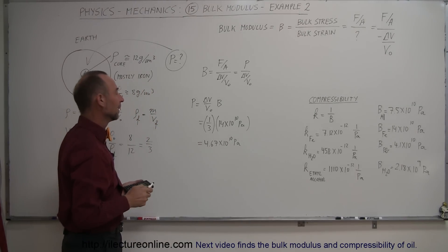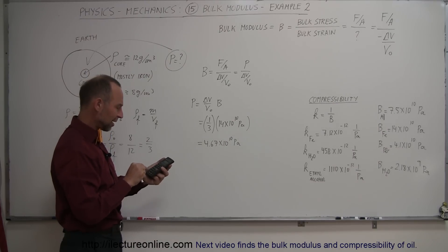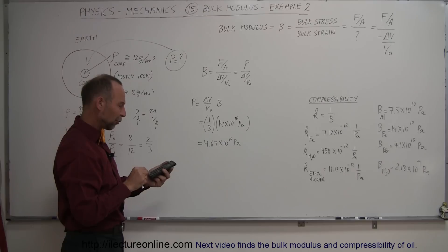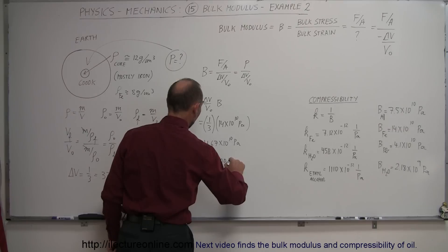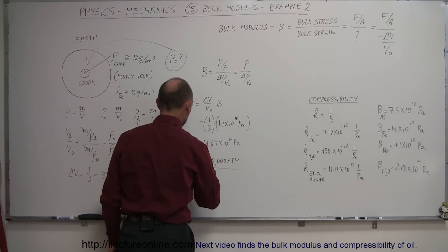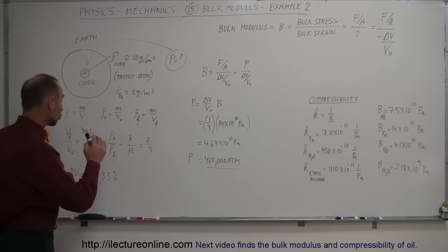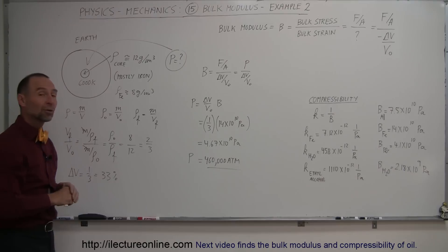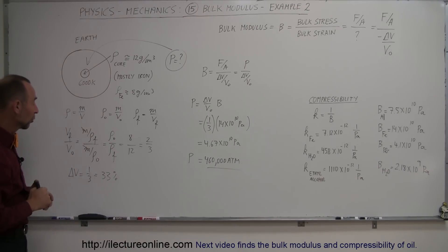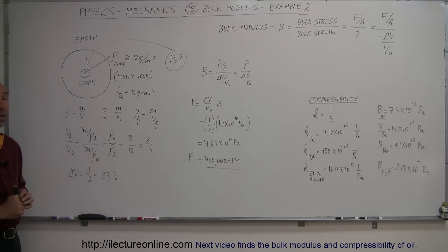So that's the pressure at the center of the Earth due to the enormous weight pushing down on it. Dividing by 101,325, that gives us approximately 460,000 atmospheres — 460,000 times atmospheric pressure. That's enough pressure to shrink the volume of the core to about two-thirds of what it would otherwise be, a one-third reduction in volume. That's quite an interesting result, and that's how you use the bulk modulus.